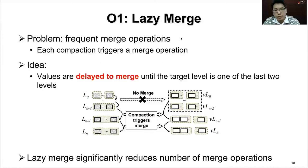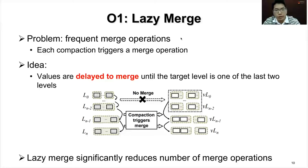The LSM tree increases its capacity towards higher levels, so the last two levels contain the majority of key-value pairs. The uneven data distribution across levels implies that most values are accessed from the last two levels of the V-tree during scans. Therefore, the degree of value ordering in the last two levels is the dominant factor determining scan performance.